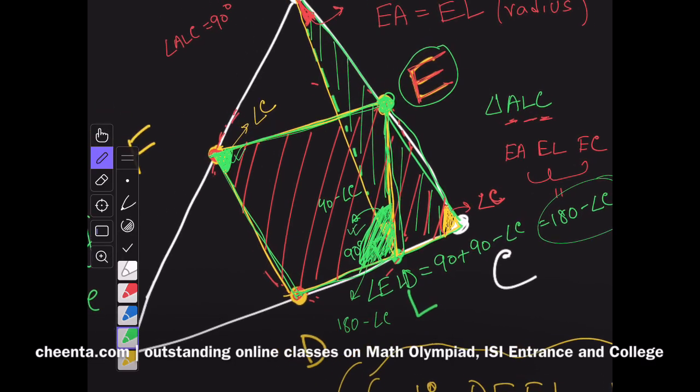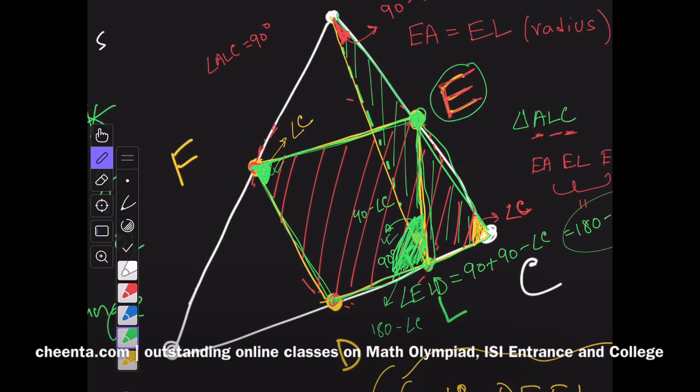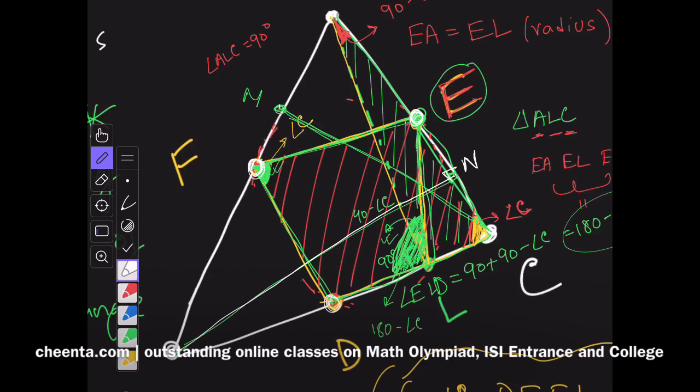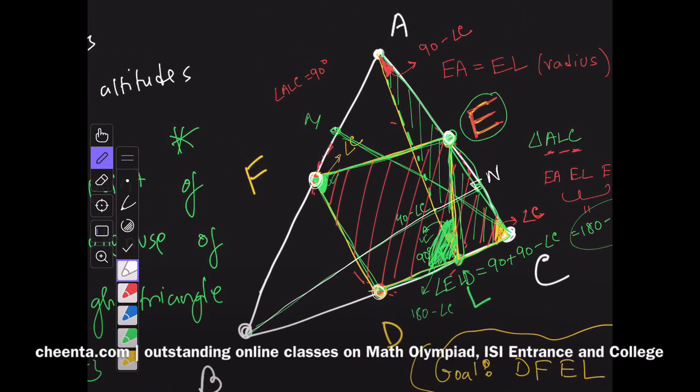This also means that I can use the same strategy instead of taking L. I can use the same strategy for M, which is another altitude, or I can use the same strategy for N, which is another altitude. So for all the three altitudes, feet of the altitudes, each of them.